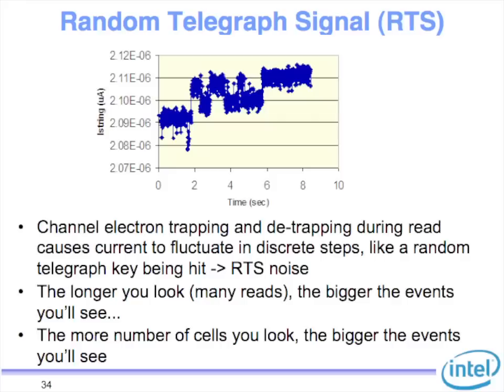Channel electron trapping and detrapping during read also causes the current to fluctuate — this is essentially RTS, random telegraph signal, because it looks like a square wave going up and down. This is a measurement I created nine years ago. You can actually start seeing the impact and this impact scales pretty seriously as you go to smaller and smaller nodes. RTS is a very big problem to the first order.